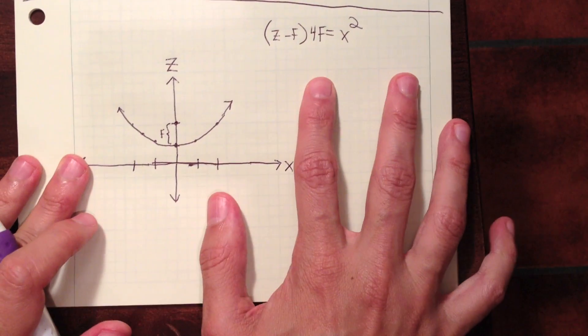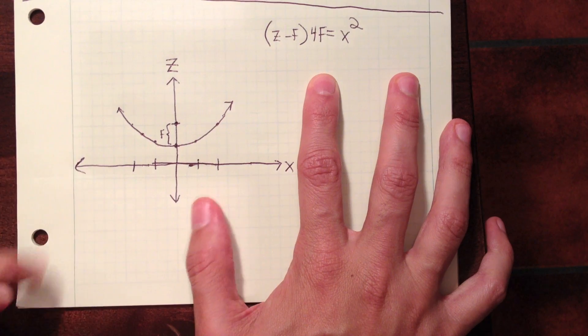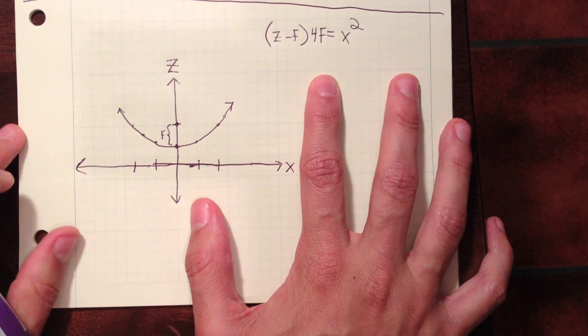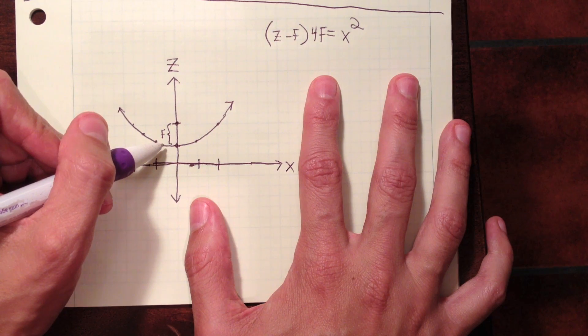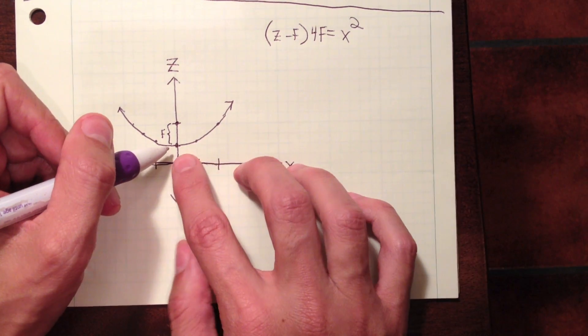Okay, so why do we use a paraboloid for the shape of the dish reflector? So let's talk about that real quick. So here is an equation for a parabola, which is just a slice through a paraboloid. So we have a focal point here, which is a distance f above the apex of the parabola.